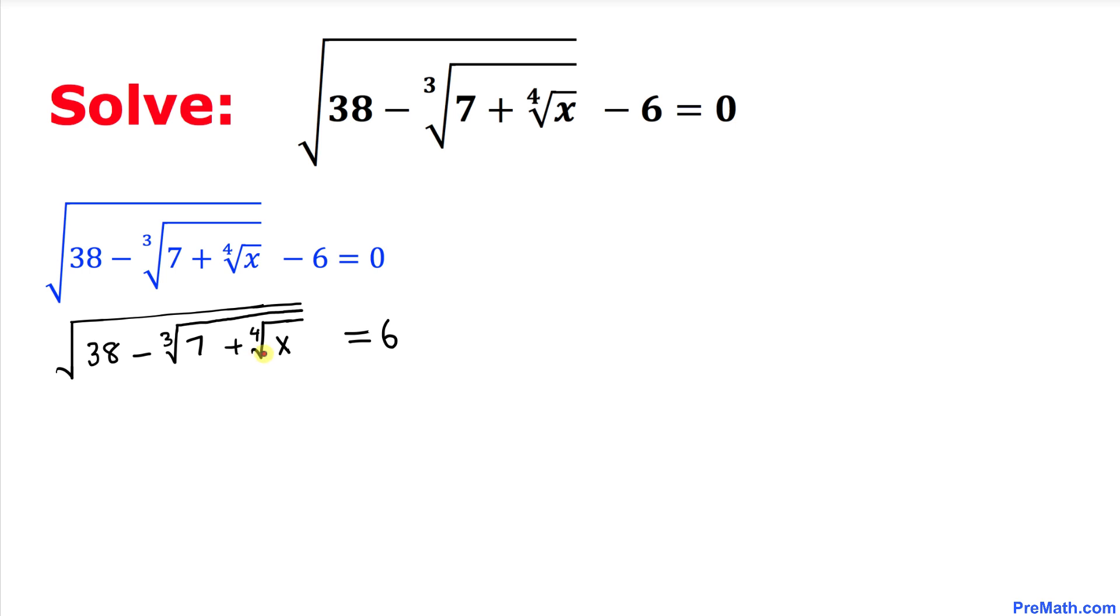Now as we can see we got a square root. We want to undo this square root, so we are going to take the square on this side and likewise we are going to take the square on this side as well.